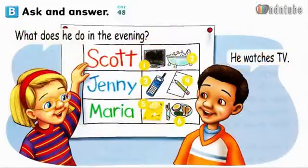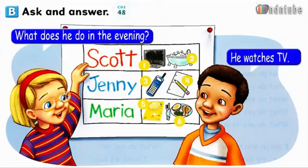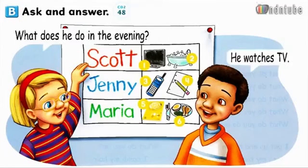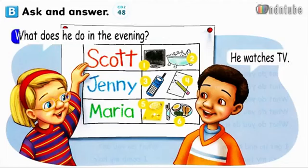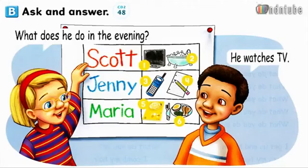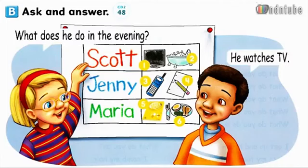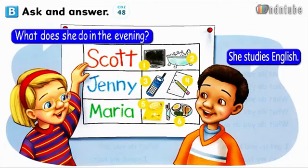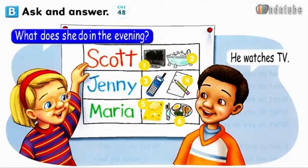Page 62. B. Ask and answer. What does he do in the evening? He watches TV. Number 1: What does he do in the evening? He watches TV. Number 2: What does he do in the evening? He takes a bath. Number 3: What does she do in the evening? She talks on the phone. Number 4: What does she do in the evening? She does homework. Number 5: What does she do in the evening? She studies English. Number 6: What does she do in the evening? She eats dinner.